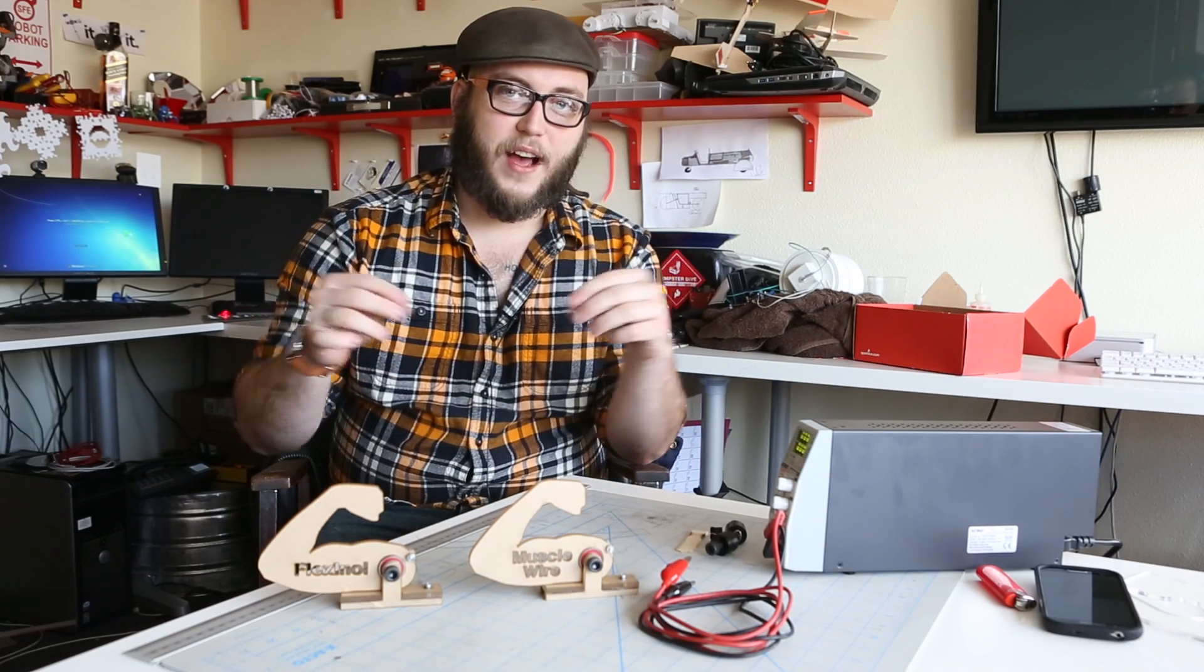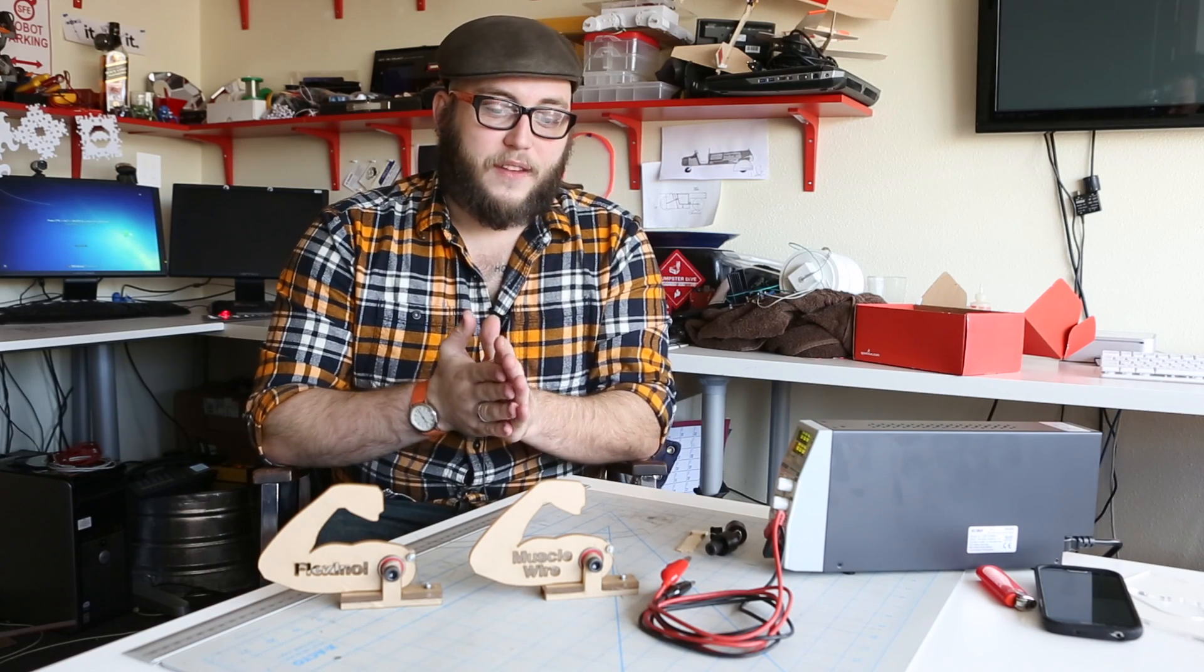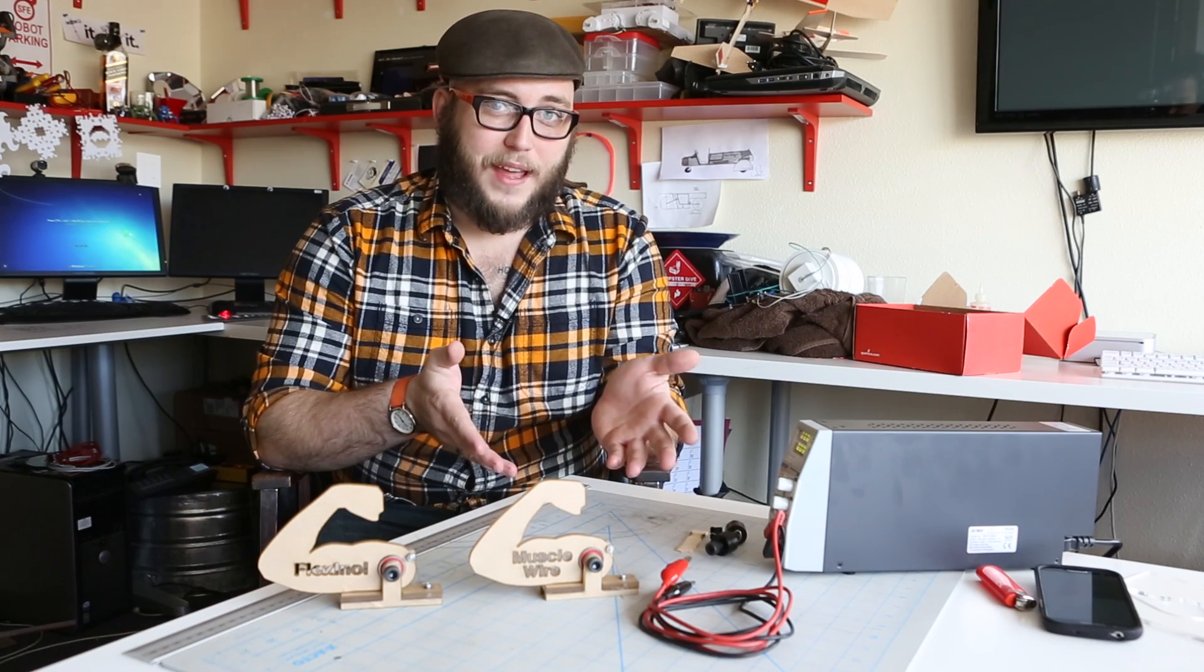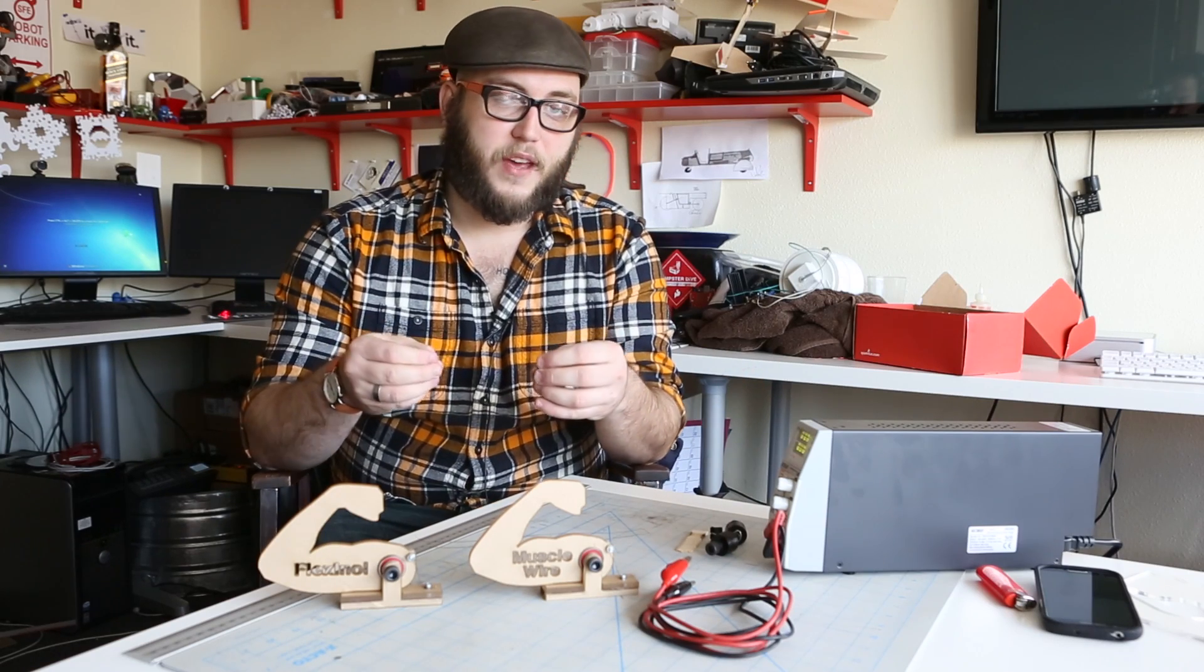So it actually deflects to either side like a coil and pulls itself together. The advantages of muscle wire are that that deflection causes there to be a lot of travel when it actually activates.